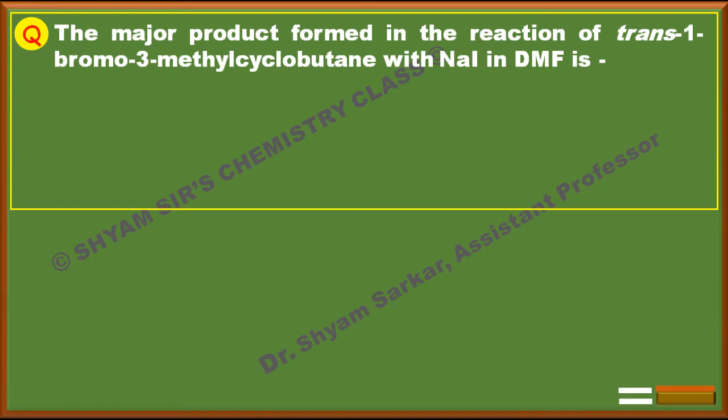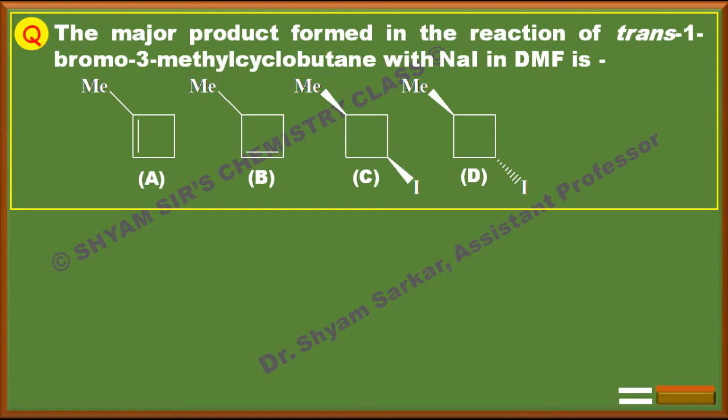The major product formed in the reaction of trans-1-bromo-3-methylcyclobutane with sodium iodide in DMF is asked, and four options A, B, C, D are given. You have to identify the major product. This question was asked in CSIR-NET 2014 June.